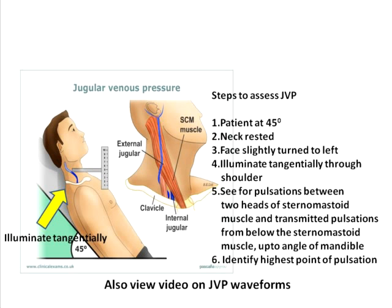Then you need to slightly turn the head to the left. Ideally the head is kept straight, but it may be difficult to visualize going close to the patient. You can gently turn to the left, but not too much — turning the neck too far left will compress the sternomastoid and may actually obstruct the pulsations of the internal jugular veins. So the neck has to be only slightly turned to the left.